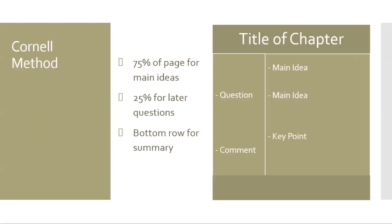Another method is the Cornell method, where you use three quarters of your notebook page for regular note-taking. The other quarter of the page to the left would be used for noting down questions you have and comments about the information to revisit when you review later. You should also leave a sectioned off row at the bottom of the page, as this is where you would write a summary of your notes when reviewing. This method also doubles as a study method, as you are actively rewriting your notes in the summary box.